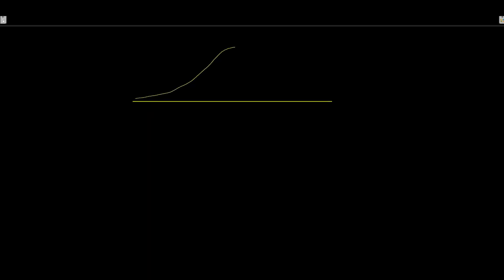Let's suppose we have a distribution. Here we have X being normally distributed, and we'll say that X is centered around 500 with a standard deviation of X of 50. Let's suppose that we are wanting to know: what is the probability that we pick out some value of X that is greater than 580?